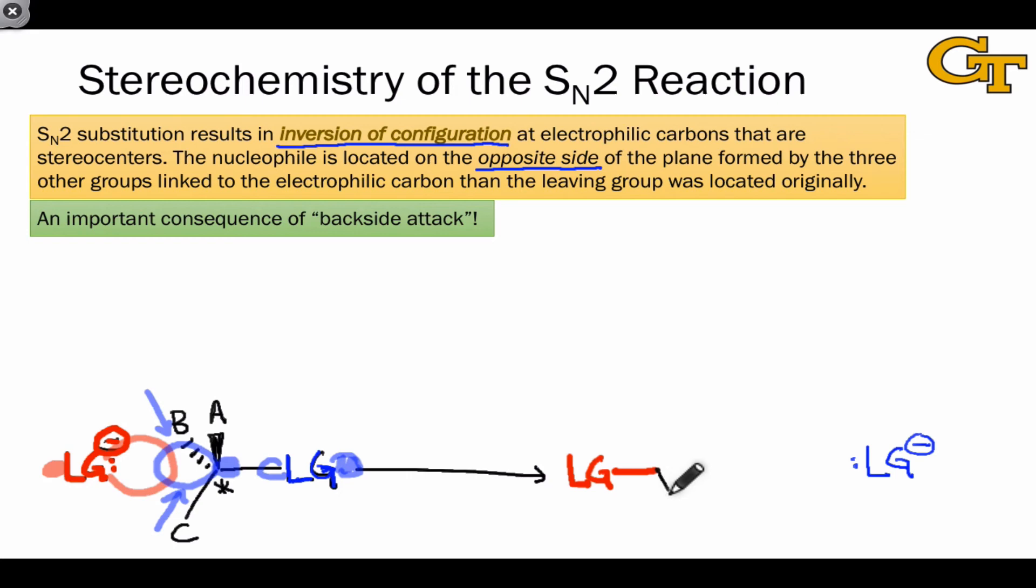In the SN2 step, the groups A, B, and C linked to the electrophilic carbon fold over like so. And this results in a change of configuration at this stereocenter.